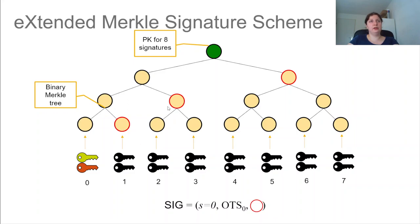as well as an authentication path. And the goal of an authentication path is that it's a set of nodes in the Merkle tree, here depicted in red, such that if a verifier computes the one-time signature public key, they can then in order hash the hash values with the authentication path to recover a candidate for the public key, which can then be checked against the public key of the Merkle scheme.